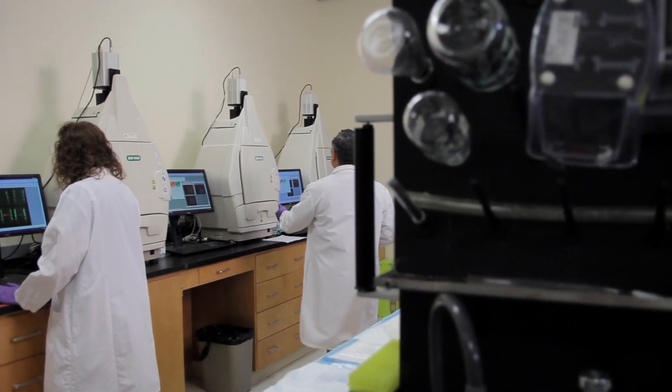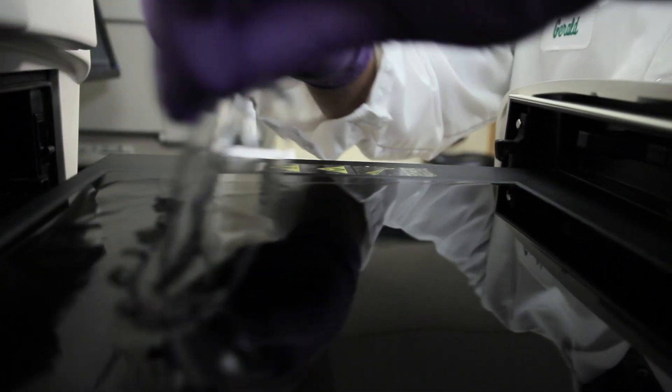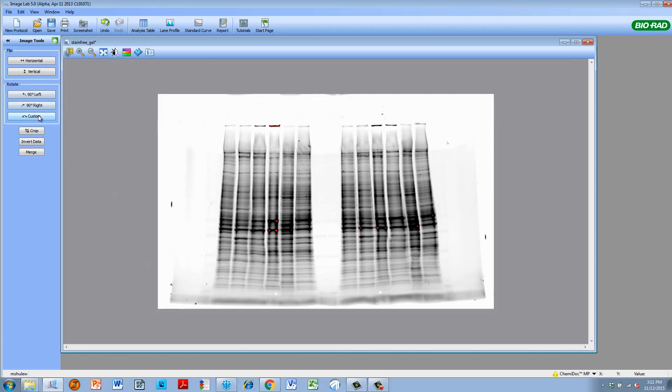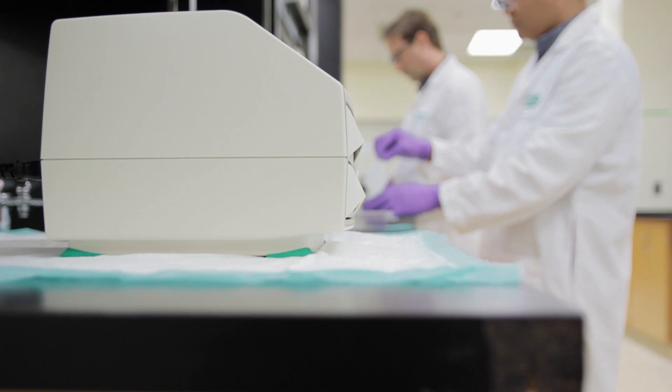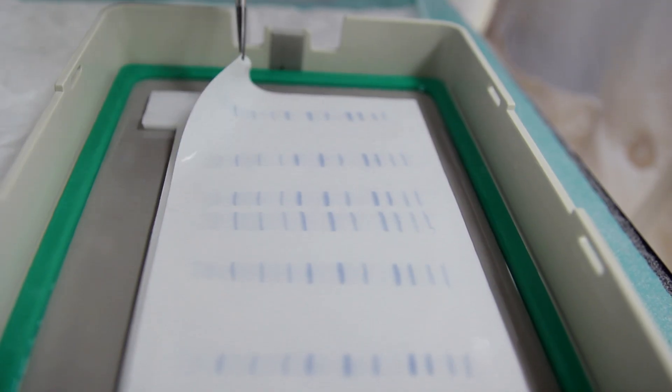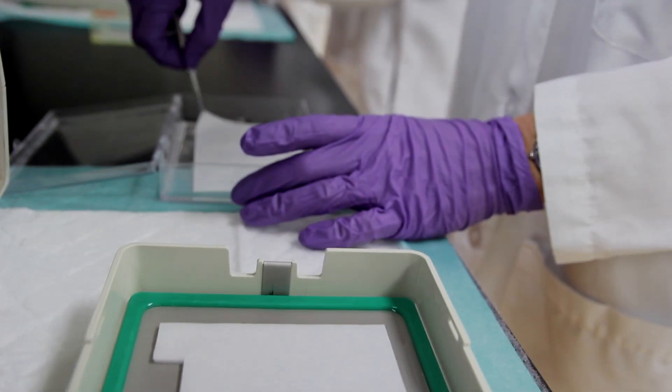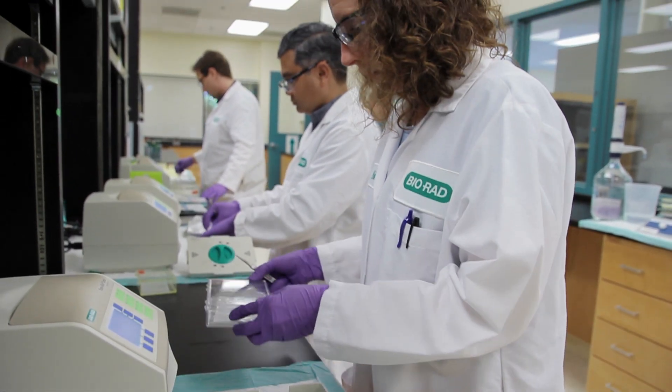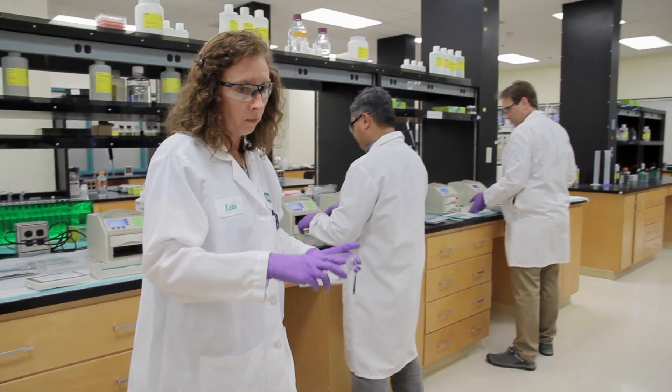We also use things like stain-free imaging of both our gels and our blots to ensure that we are looking at high quality samples and that we are getting an efficient transfer. We also use a gel system and a transfer system, the Trans-Blot Turbo, that allows us to have very fast gel running times as well as very fast transfer times. This allows us to have a very robust, efficient, and very fast process.